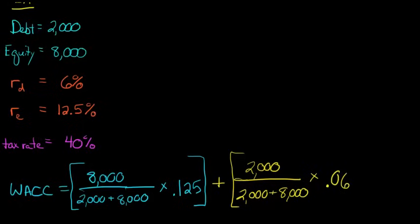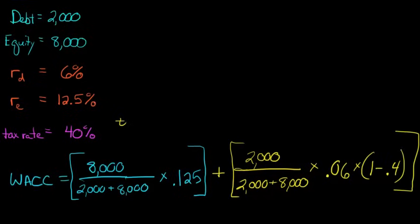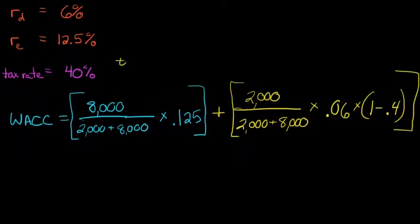Now we're going to multiply that by the cost of debt. That's 6%, so that's the same as 0.06. But now we have to factor in that after-tax cost of debt. So what we're going to have is 1 minus the tax rate, 1 minus t, which is 1 minus 0.4. Now t is just the tax rate. So now we've got this big long equation, but let me just save you the math here.